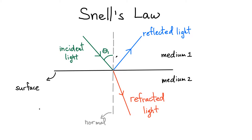Part of that light is going to be reflected. It's going to be reflected here, and this angle that it makes is actually also equal to theta 1, because that is our law of reflection — whatever the incident angle is has to be equal to the reflected angle. Now, the incident light is in medium 1, and I'm going to say that that medium has an index of refraction N1.